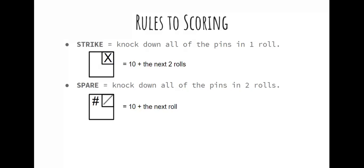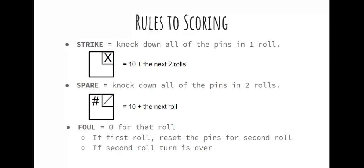The last thing we need to know before we do some scoring is the foul. If you get a foul — that's when you step on or past the front line of the bowling lane — you get a zero for that roll even if you knocked pins down. If the foul happens on your first roll, you have to reset the pins so you can take your second roll and go for the spare. If the foul happens on your second roll, you get a zero for that turn and your turn is over.